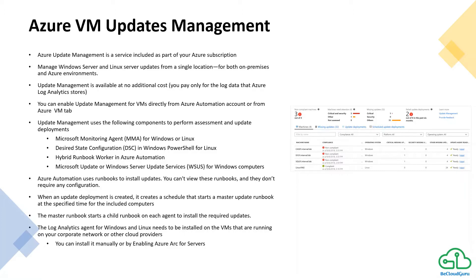Azure Automation uses runbooks to install updates, but you cannot view those runbooks and they don't require any configuration from your end — Azure manages them in the background. When an update deployment is created, a schedule is created which starts the master update runbook at the specified time. That master runbook then starts child runbooks on each agent where updates need to be installed. The Log Analytics agent for Windows and Linux needs to be installed on the virtual machines.